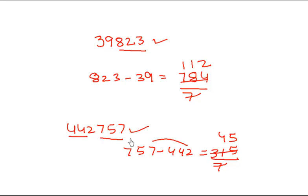It's so simple — without actual division, you just concluded that the given number 4427575 is divisible by 7. Let's move on to another divisibility test.